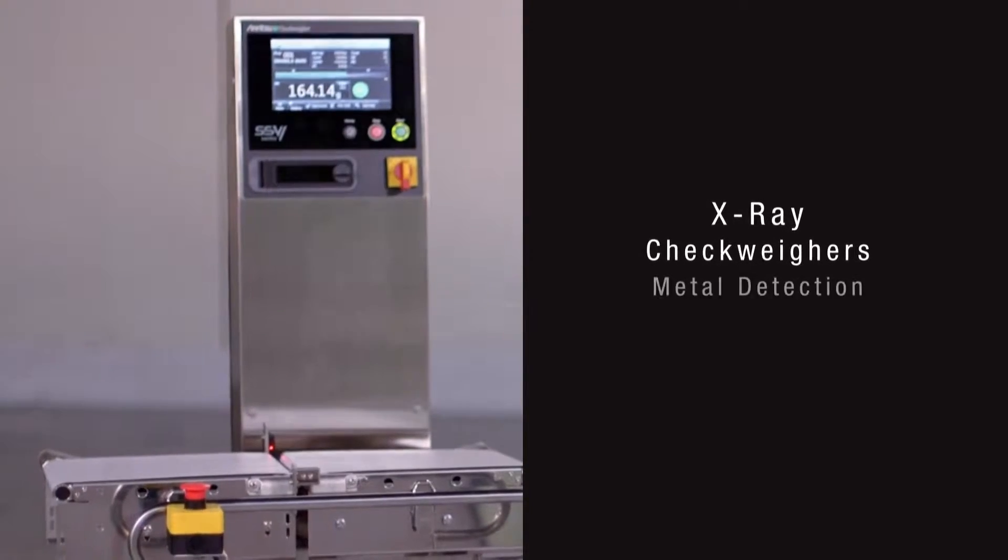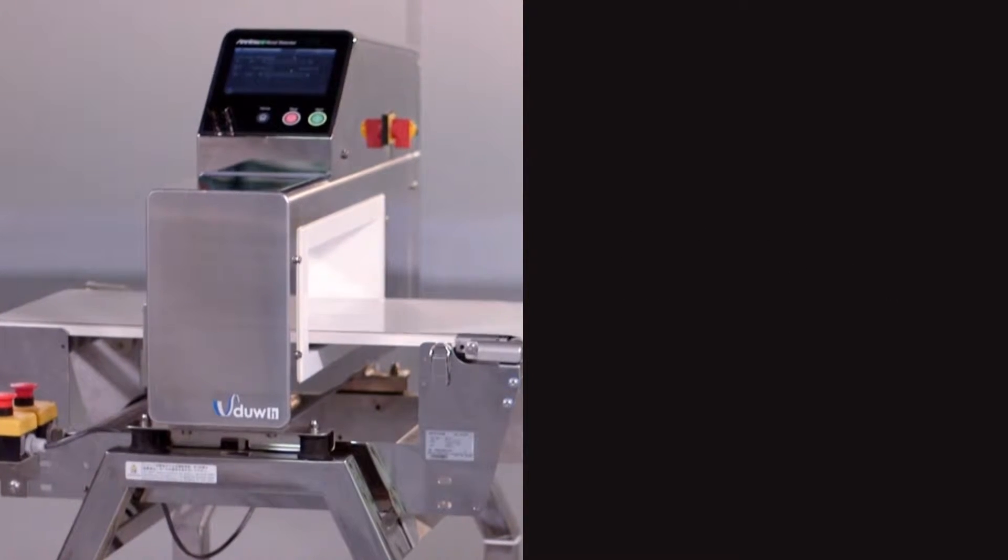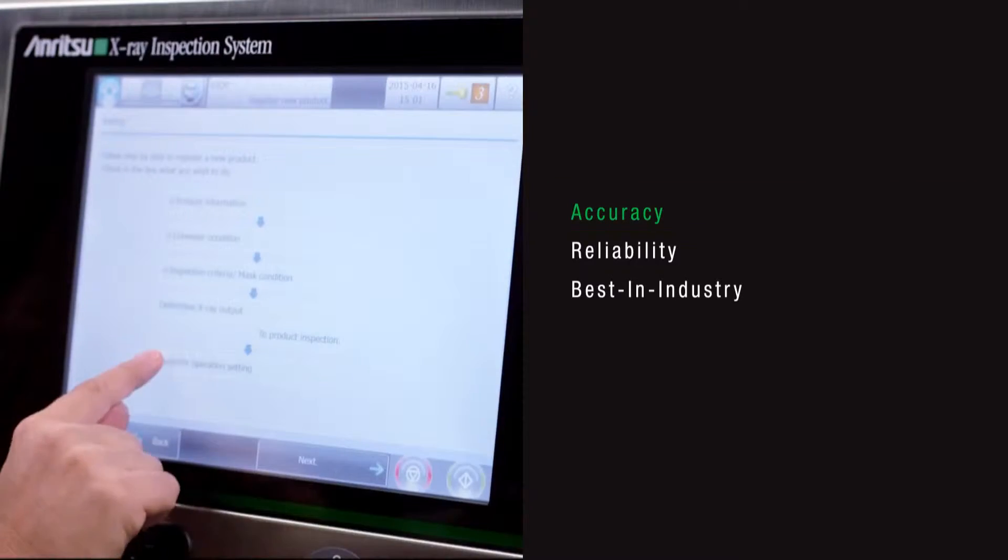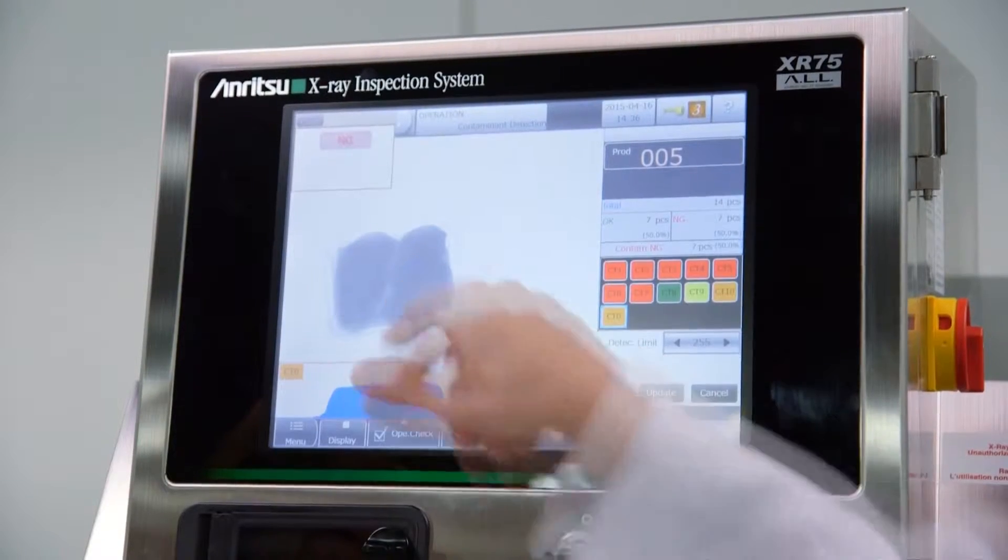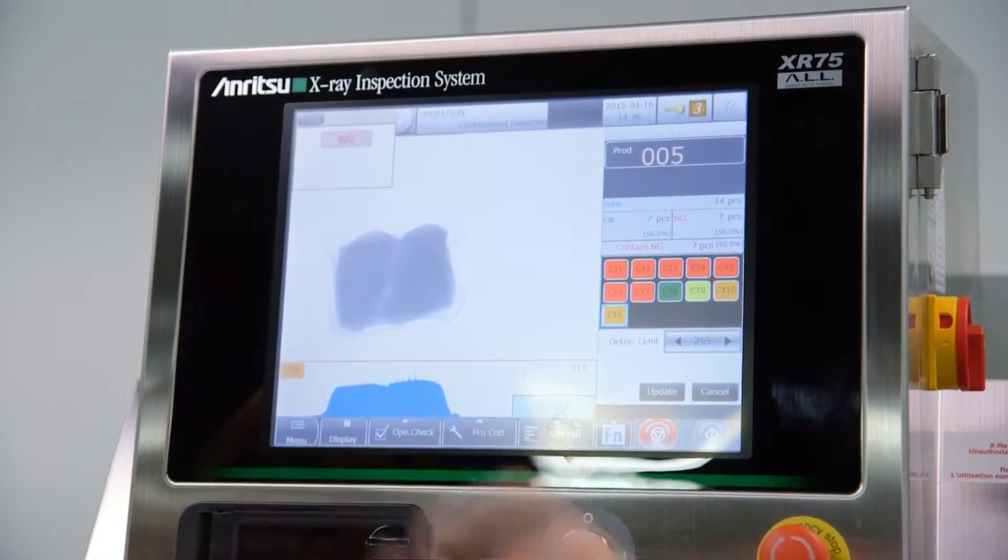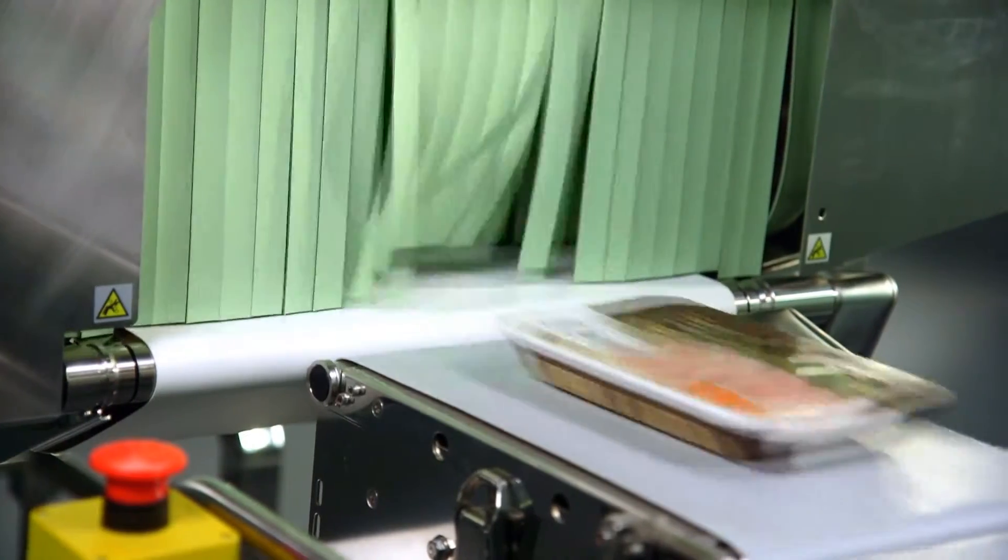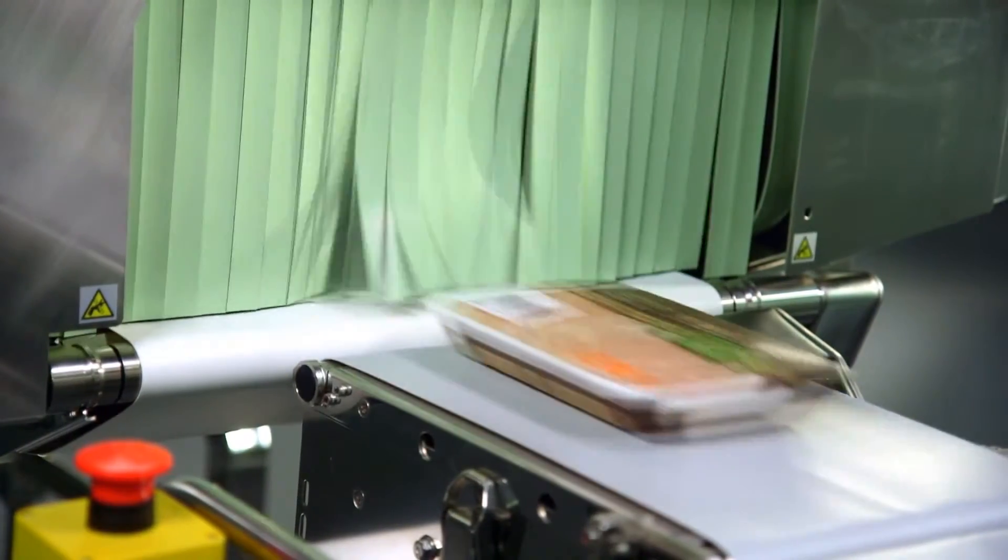Anritsu X-Ray Check Weighers and Metal Detection Technology Solutions are designed to be more accurate, more reliable, and the best in the industry to help poultry processors achieve higher line efficiencies while focusing on ROI, TCO, and OEE.